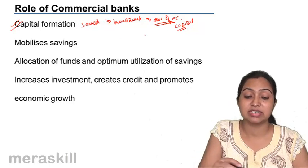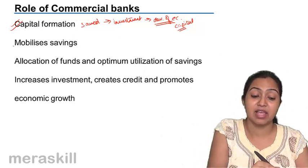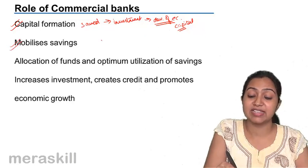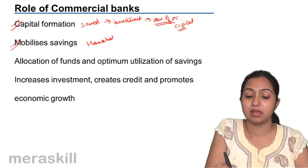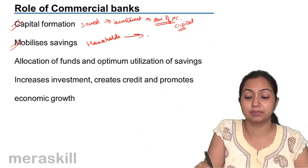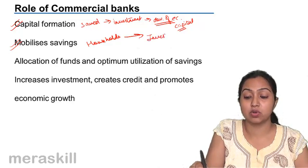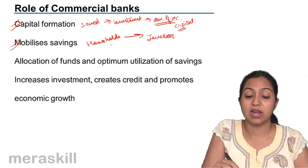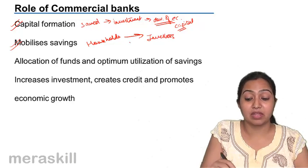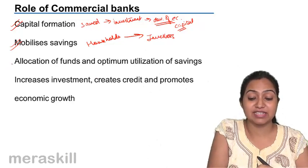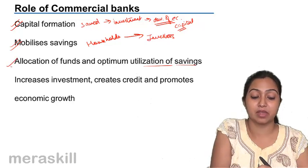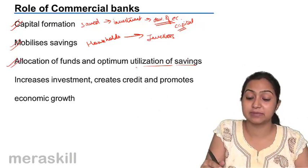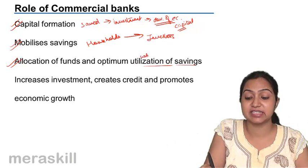One important function is that it helps in capital formation, and second is that it mobilizes savings from households and brings them to investors. So it mobilizes savings. Then there is allocation of funds and optimum utilization of savings — it allocates funds wherever it is necessary.